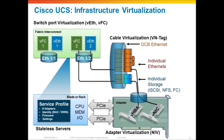Let's take a look at the infrastructure virtualization capabilities of UCS. UCS is a single integrated system of switches, cables, adapters, and servers all tied together under a single common management umbrella. One capability that really makes all of this happen is the ability to virtualize every component of the system at every level: switch port virtualization, cable virtualization, adapter virtualization, as well as server virtualization.